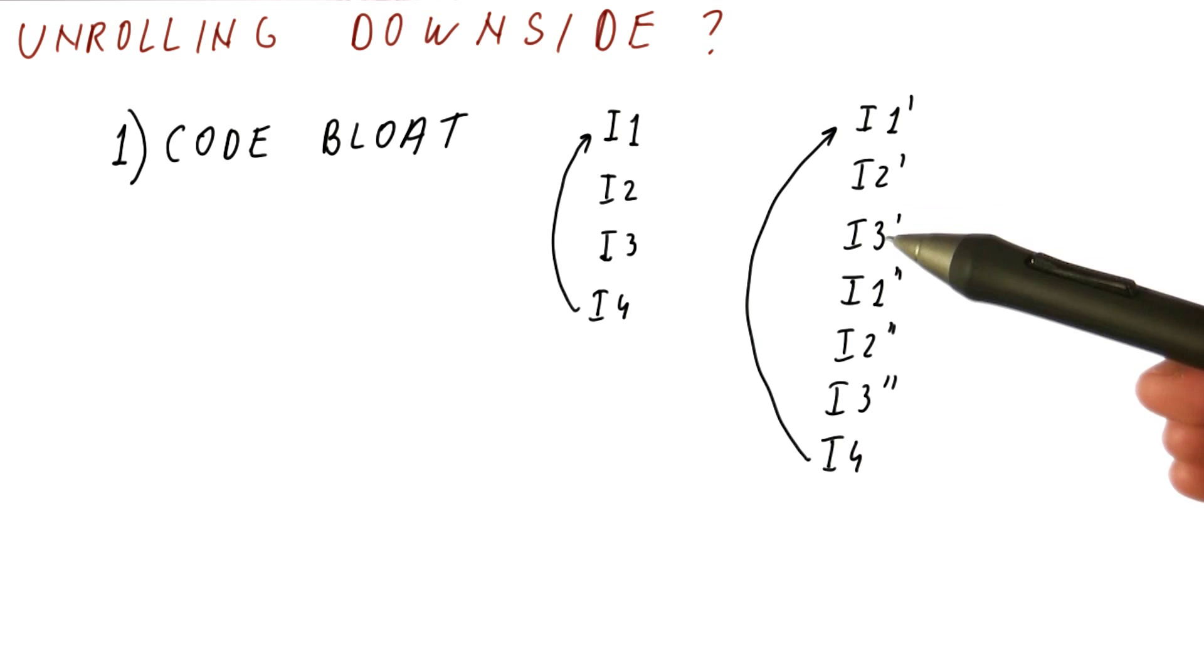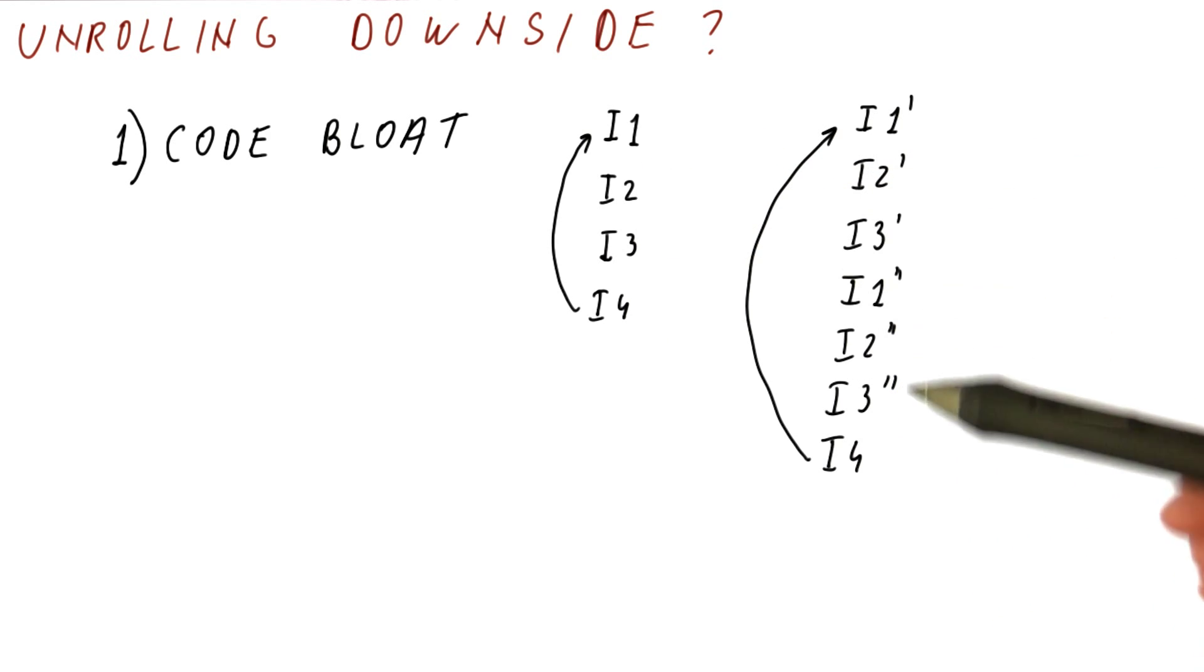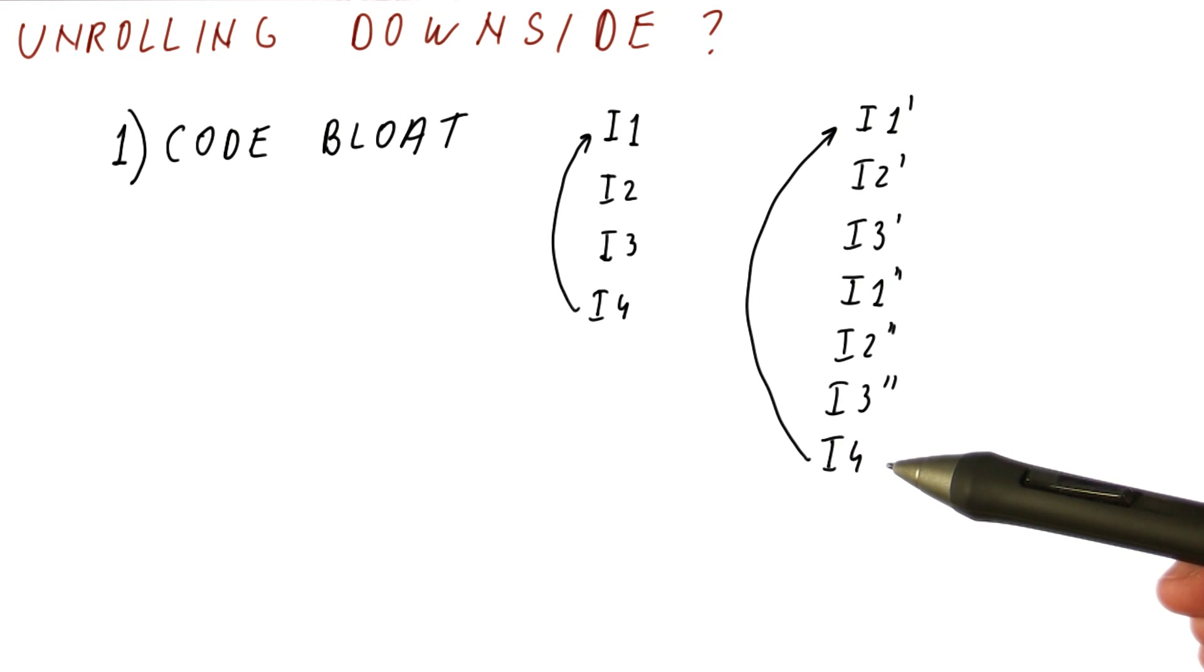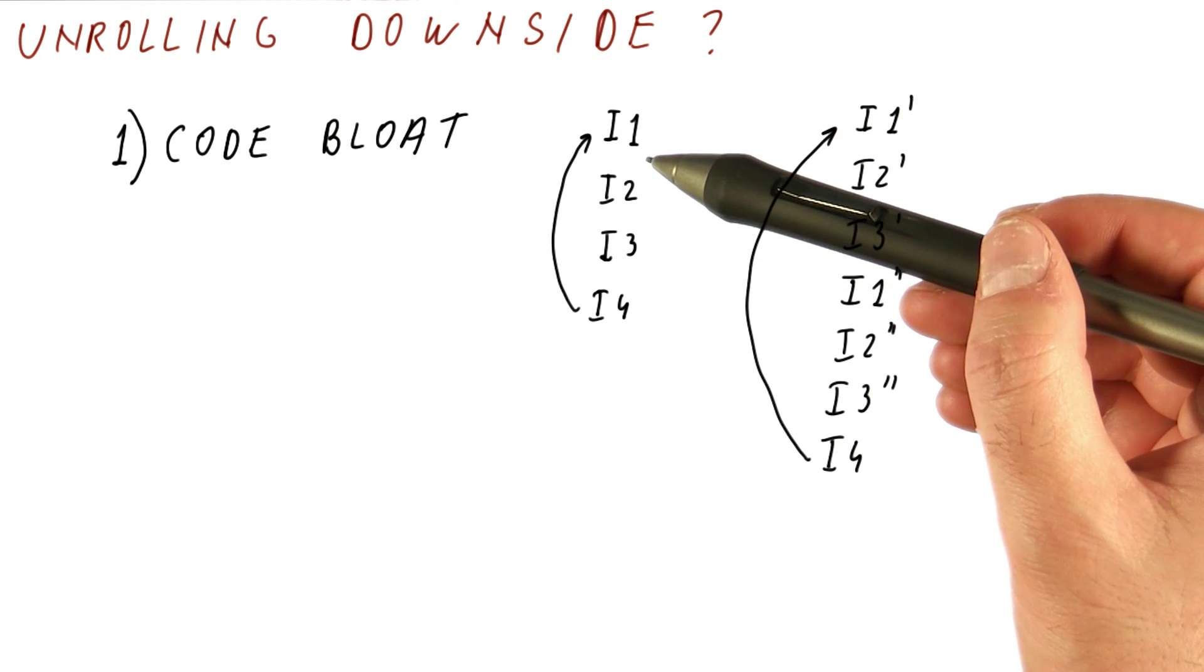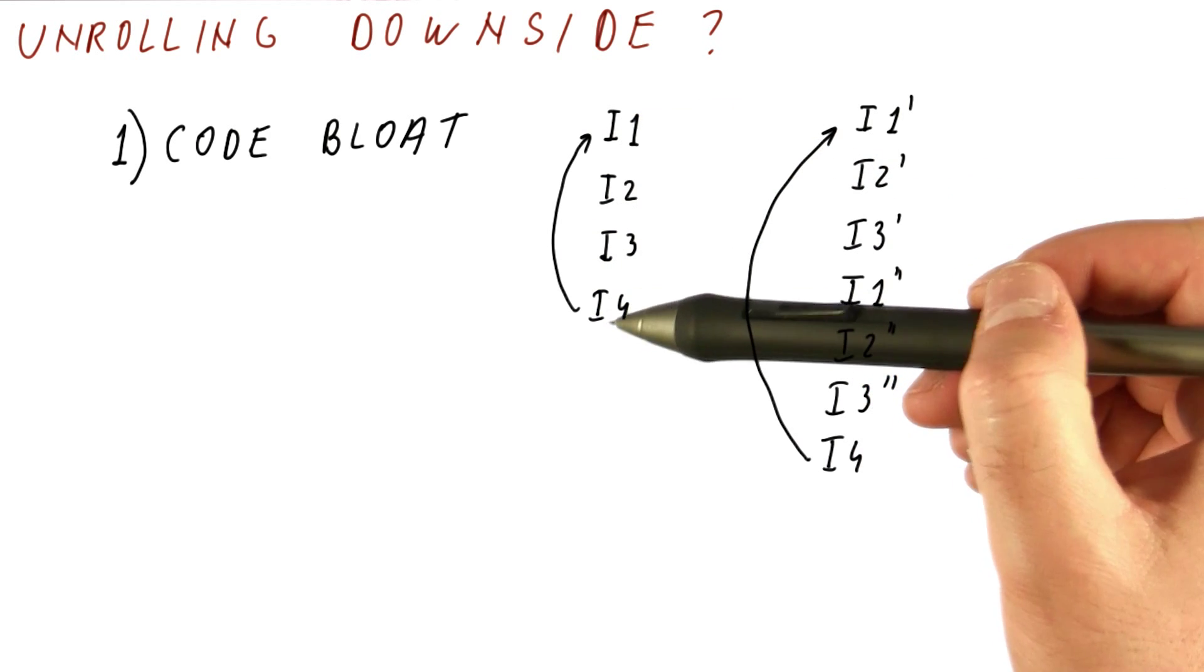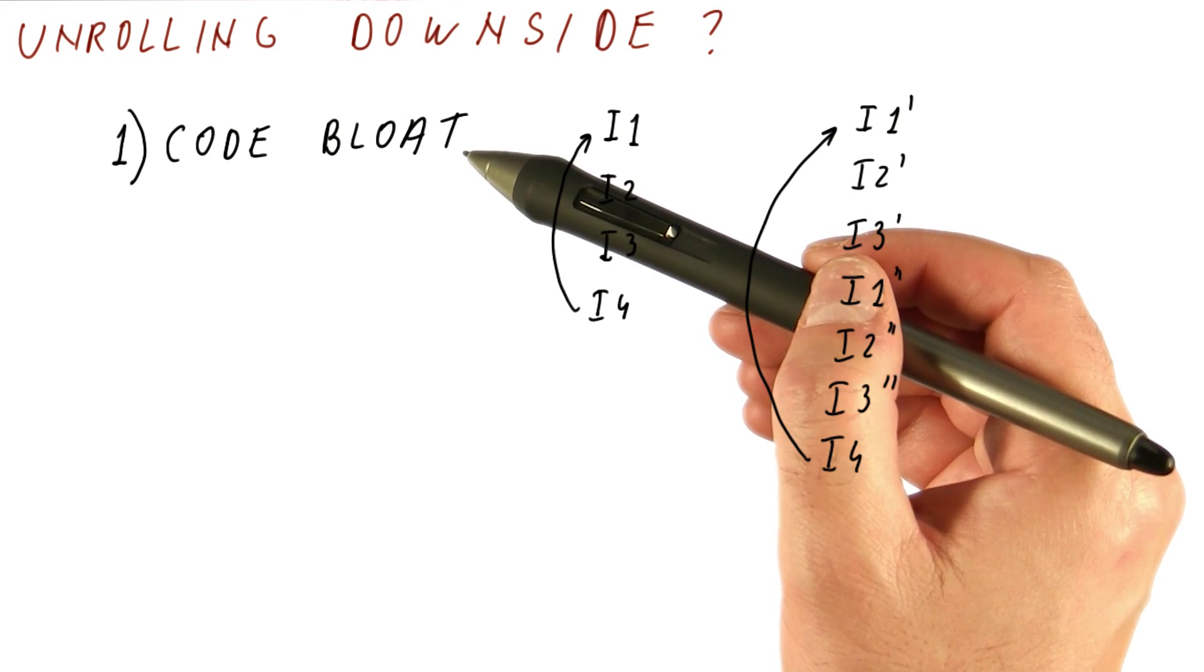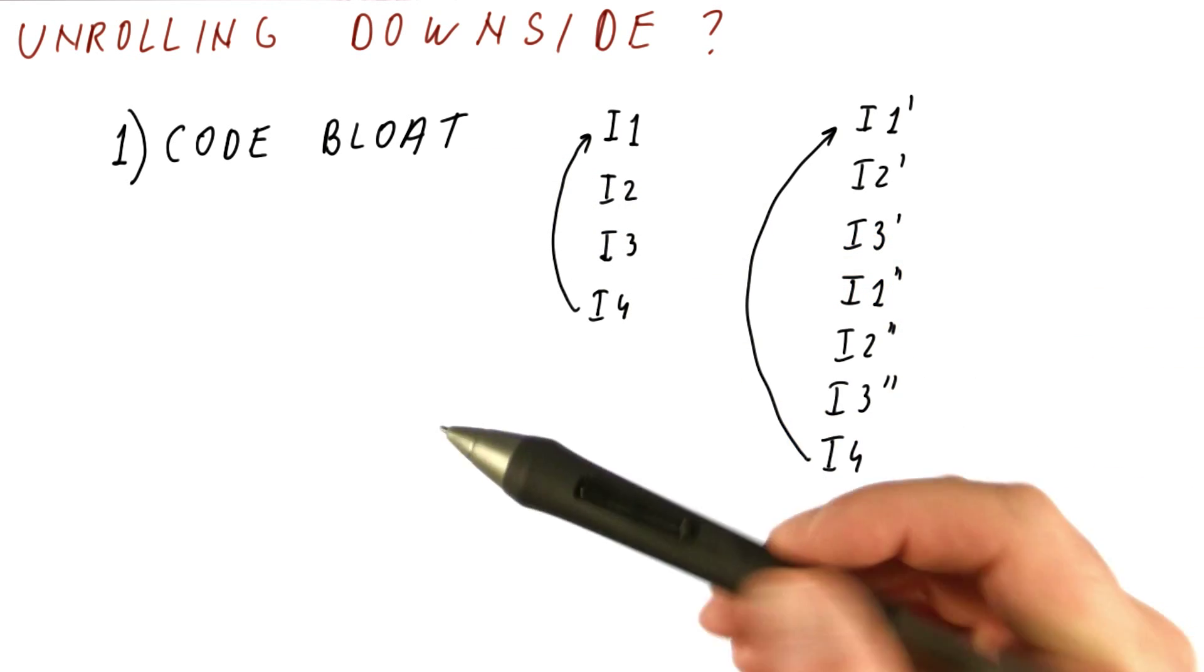But the code size is much larger. Here we had four instructions in our code. Now we have seven instructions in our code. If we decide to unroll more than once, meaning do the work of, let's say, four of these iterations, the code size will be proportionally larger. So the code grows quickly with the number of unrollings we do.